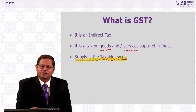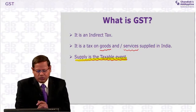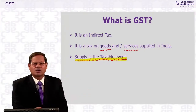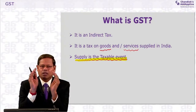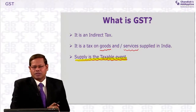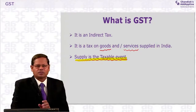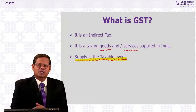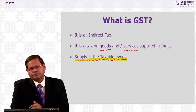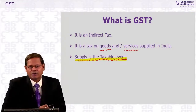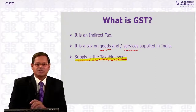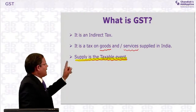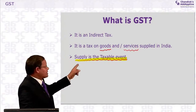In the case of works contract relating to immovable property, there is an element of both service and goods. Both are clubbed together — you simply pay one tax, that is GST; no service tax, no VAT or CST. The key word here is 'supply.' GST is a tax on goods and/or services supplied in India.